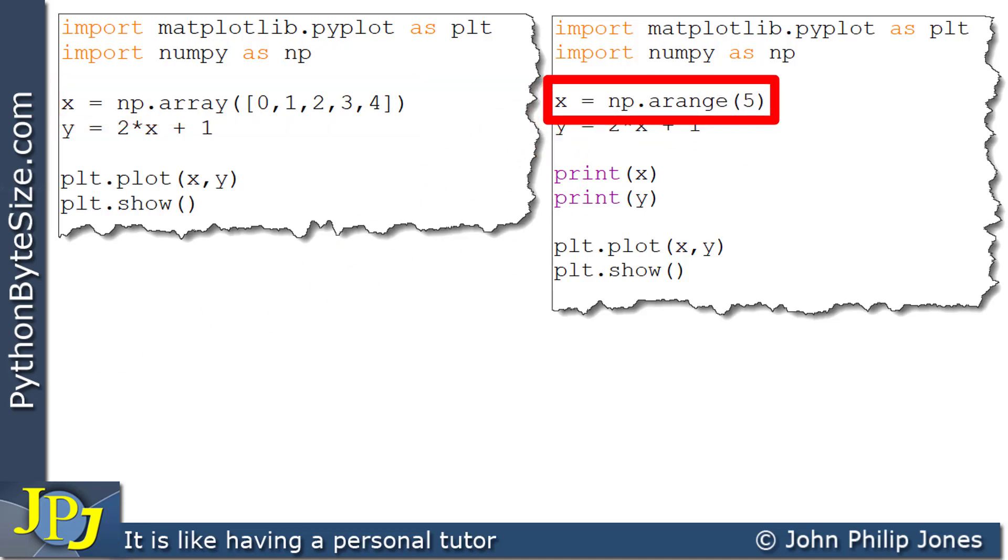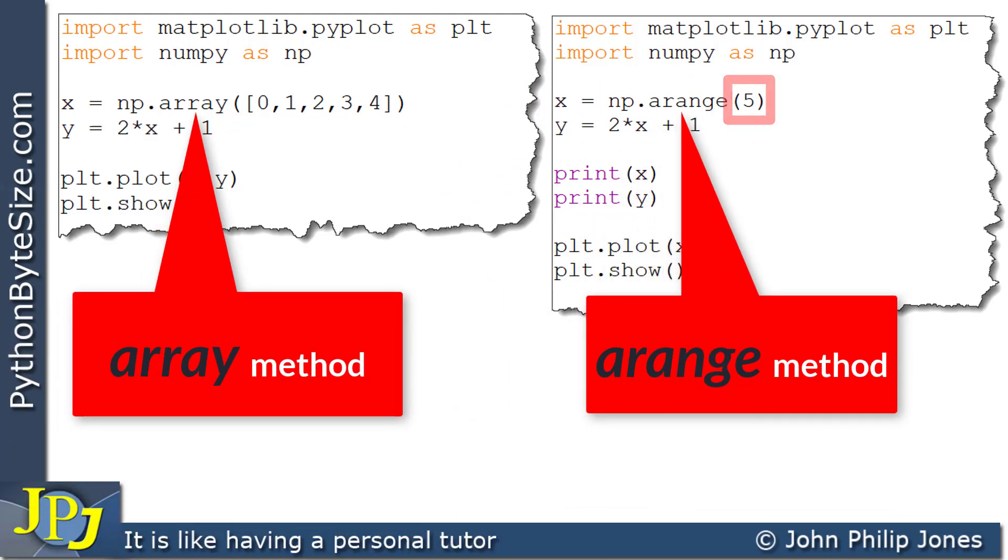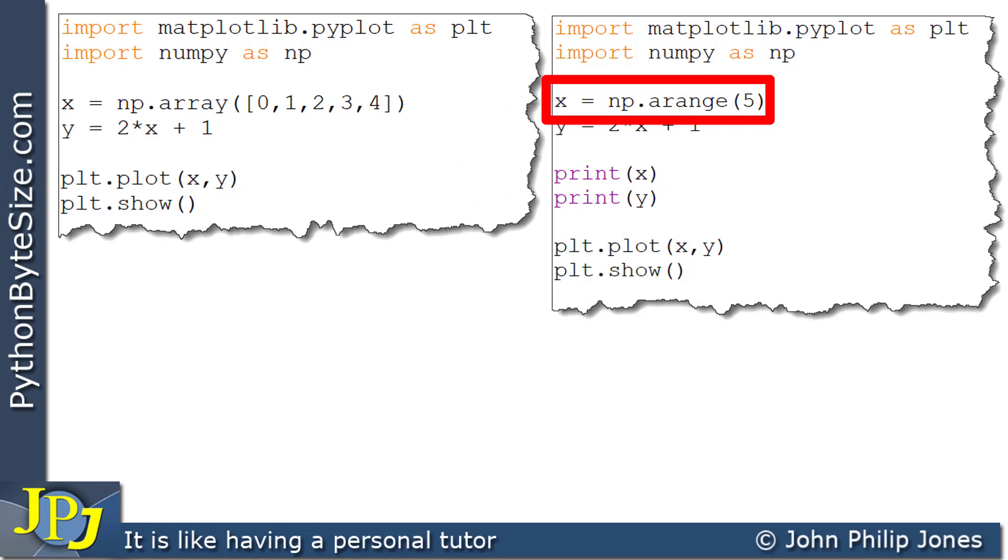What you will get from this is a NumPy array that goes from 0 to 4, in the same way as this gives a NumPy array from 0 to 4. But here, I had to pass in a Python list, whereas here, what I passed in was 5. No Python list, just 5. Now what this will do, it will produce a NumPy array starting at 0 and going all the way up to 4. It doesn't include the 5.